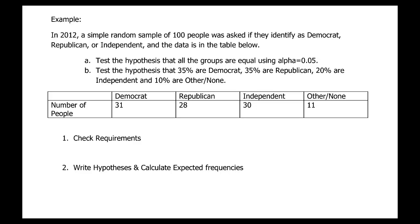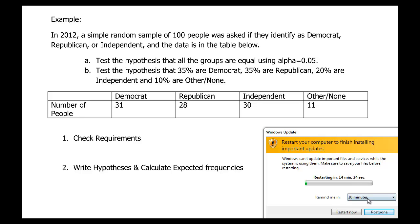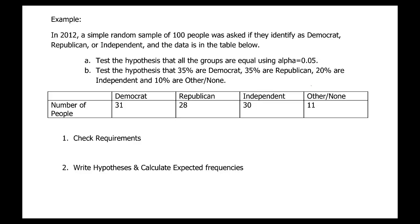For our goodness of fit test example, we're looking at a survey of a simple random sample of 100 people asking their political affiliation: Democrat, Republican, Independent, or Other/None. The question asks us to do it two different ways — testing the hypothesis that all the groups are equal, and also one where we have expected percentages. The survey data gives us observed values from the sample, and we'll calculate expected values shortly.